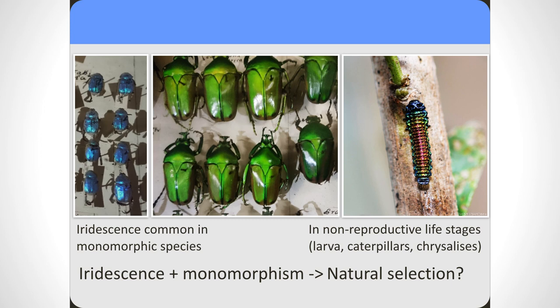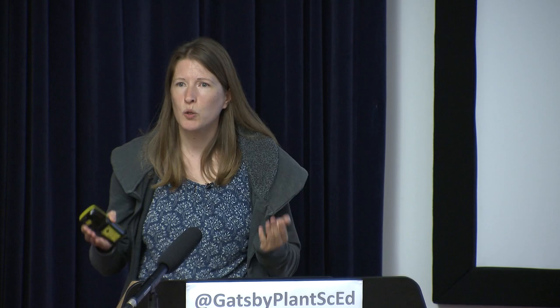Interestingly, iridescence is actually very common in monomorphic species — where both males and females look identical — and also incredibly common in non-reproductive life stages, such as larvae, caterpillars, and even chrysalises. So we came up with the question: could iridescence actually function as a counterintuitive form of camouflage? We decided to test it.